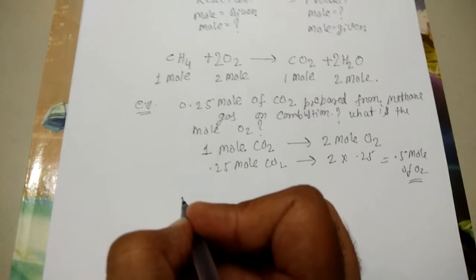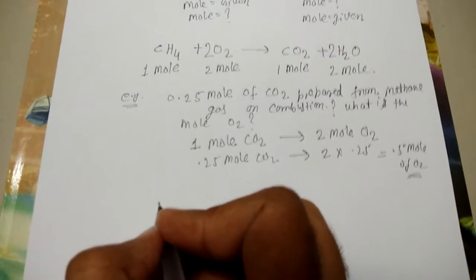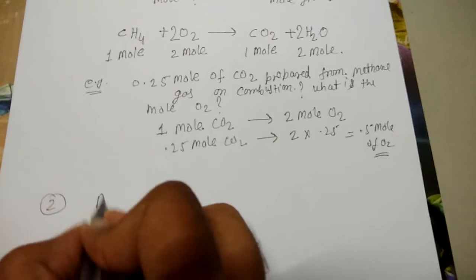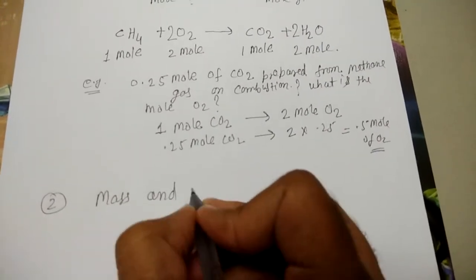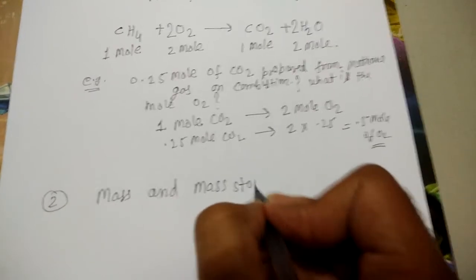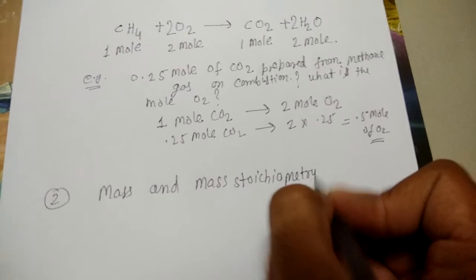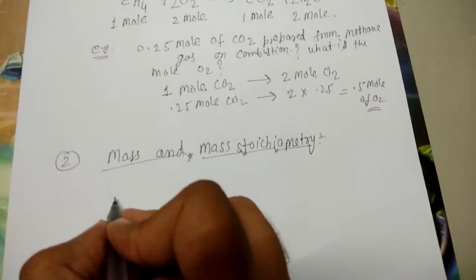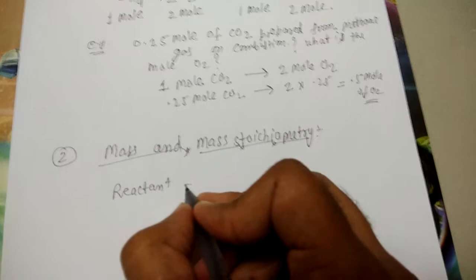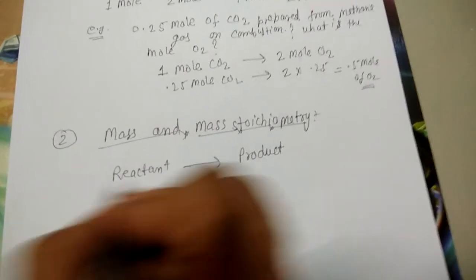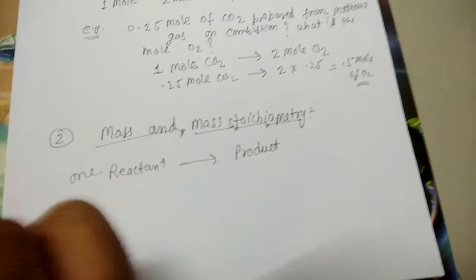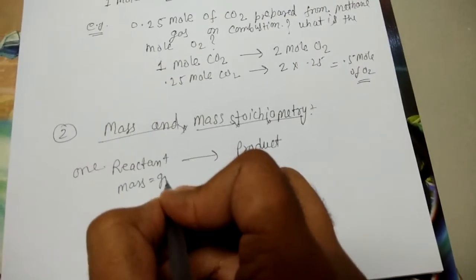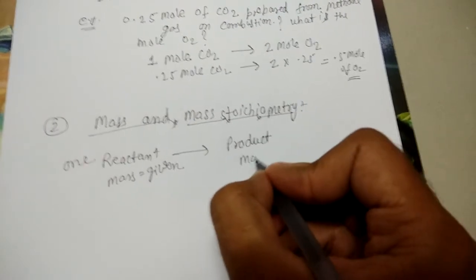So you see friends, if the reaction is balanced then your answer can come in a very easy way. Now the second stoichiometry is mass and mass stoichiometry. In mass and mass, reactant gives product. If one reactant is present to give product, then mass of reactant is given and you will find the mass of product.